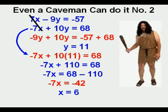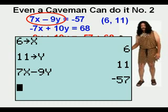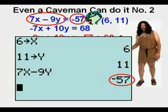He makes note of the coordinates, 6 comma 11. We'll start our check of Og's work by storing 6 for x and 11 for y in our graphing calculator. That would be 6 storage x, enter, 11 storage y, enter. We now enter the left side of the first equation, which is 7x minus 9y. We see that it equals negative 57, just like our original first equation. Check.